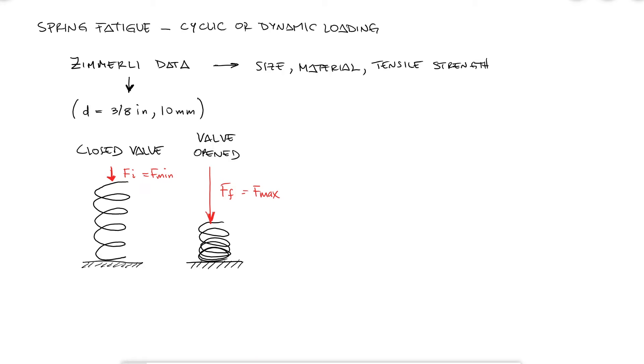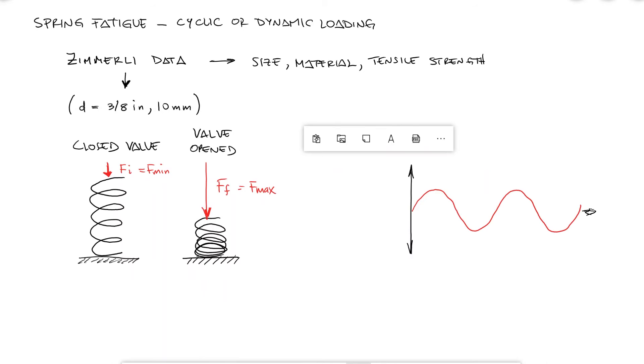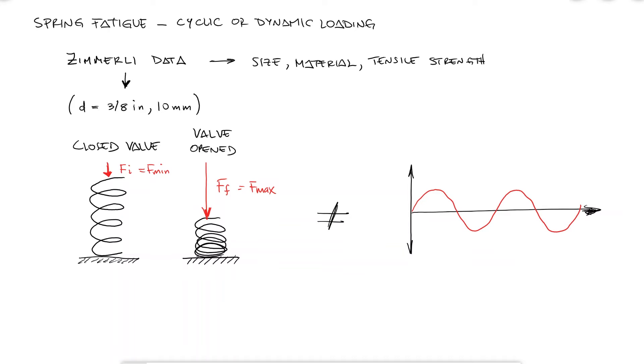For this reason, the cyclic loading is not a completely reversed stress that goes from positive to negative values hovering around zero, but from a low compression to a high compression, meaning a low shearing stress to a high shearing stress, over and over.